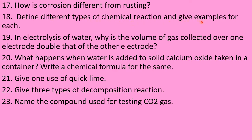Make a chart listing the different types of chemical reactions, their meanings, and examples under each category. In electrolysis of water, why is the volume of gas collected over one electrode double that of the other? Answer this strictly according to the law of constant composition. Write down the law, the equation, and for one mole of water give the ratio of H to O by mass and by volume.